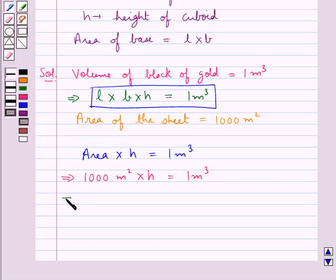This gives us H is equal to 1 meter cube upon 1000 meter square. This is equal to 0.001 meters.